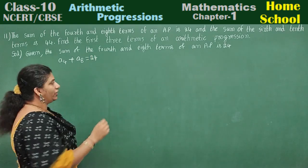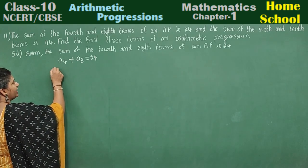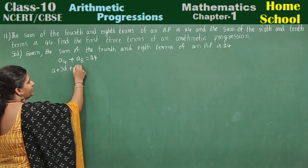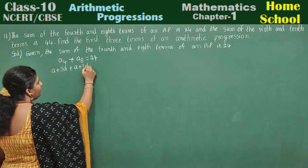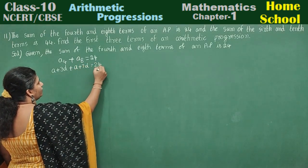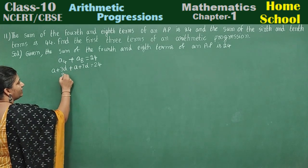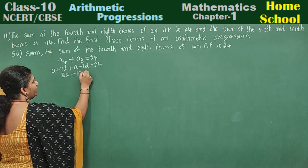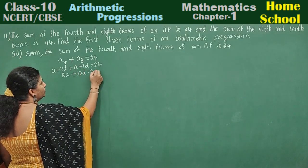After solving this, we write A4 in general form as A plus 3D. A8 is A plus 7D equals 24. A plus A will be 2A. 3D plus 7D is 10D equals 24.